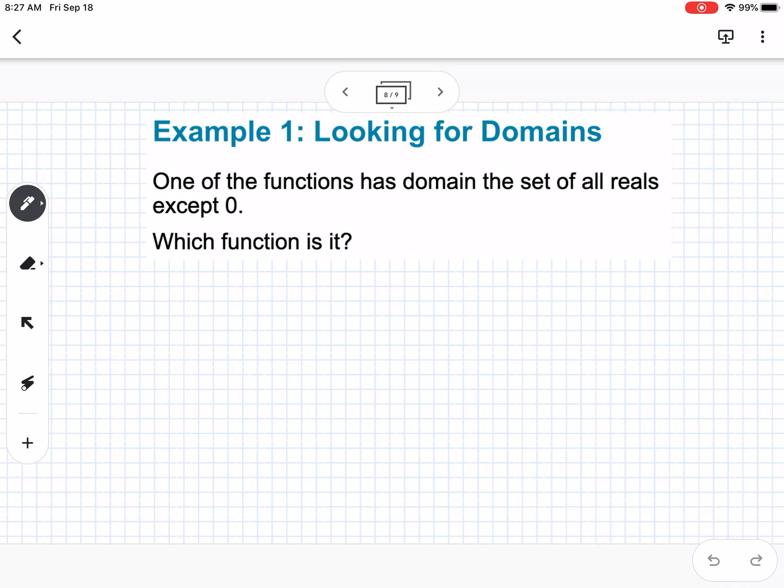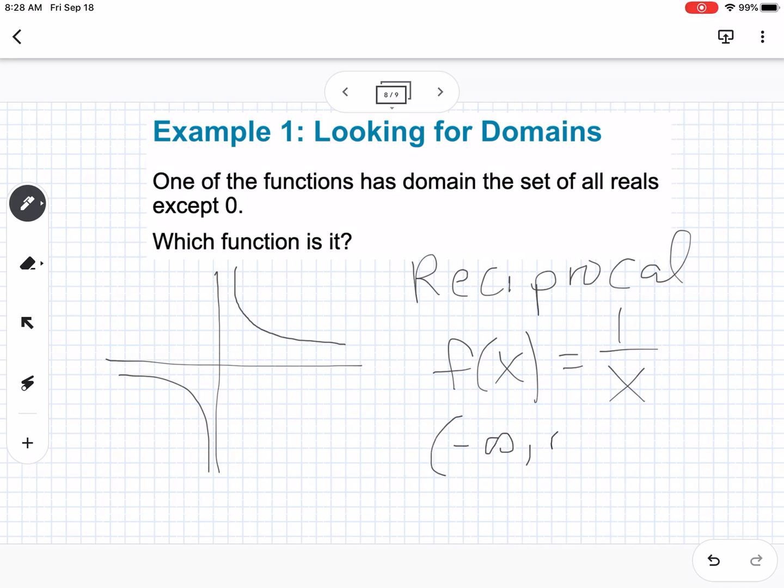Example one: looking for domains. Which of these functions has domain the set of all real numbers except zero? Looking at the 12 functions, you're looking for a graph that does not have a value at zero but at every other number. That's the reciprocal function, f(x) = 1/x, which has an asymptote at zero. The domain is (-∞, 0) ∪ (0, ∞).